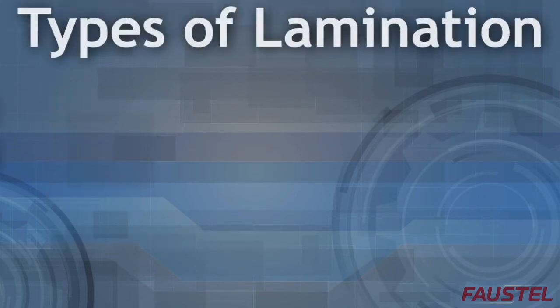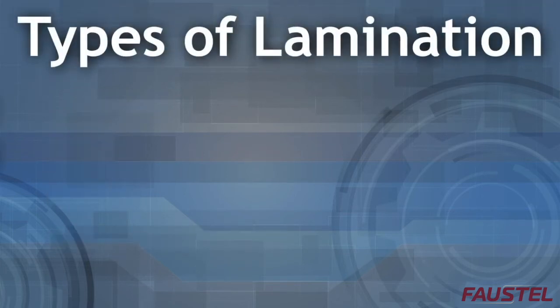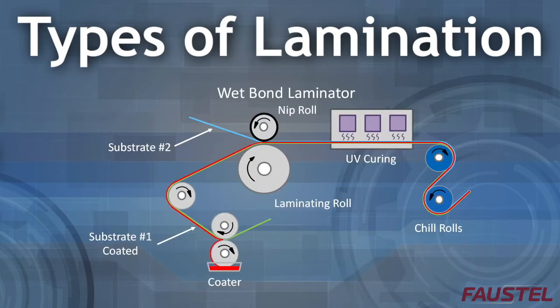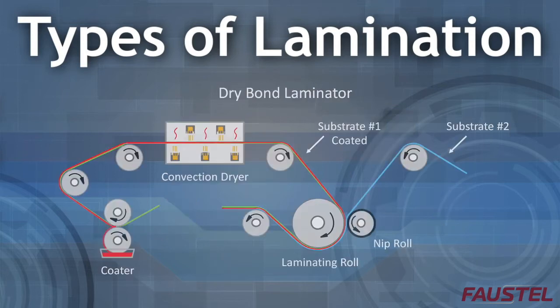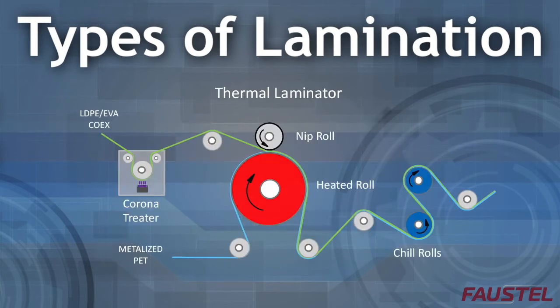In general, laminating is defined in one of three ways: wet bond, dry bond, and thermal.